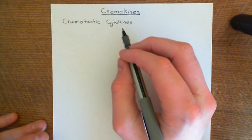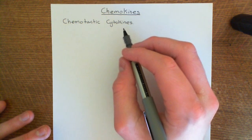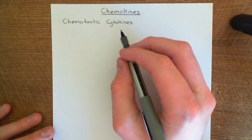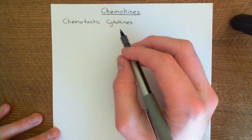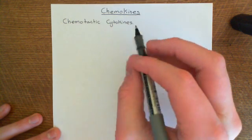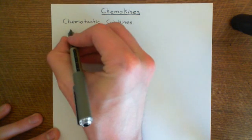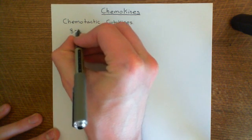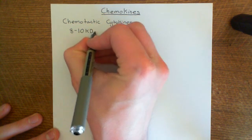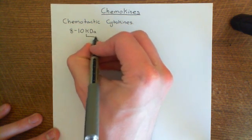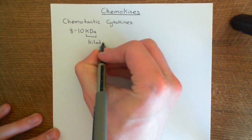So, let's have a look at the structure of these proteins, and then let's see examples of different chemokines and see where they're important in the immune system. We'll start with the structure of chemokines. Chemokines are proteins that are usually between eight and ten kilodaltons in size. Kilodaltons is abbreviated to kDa.